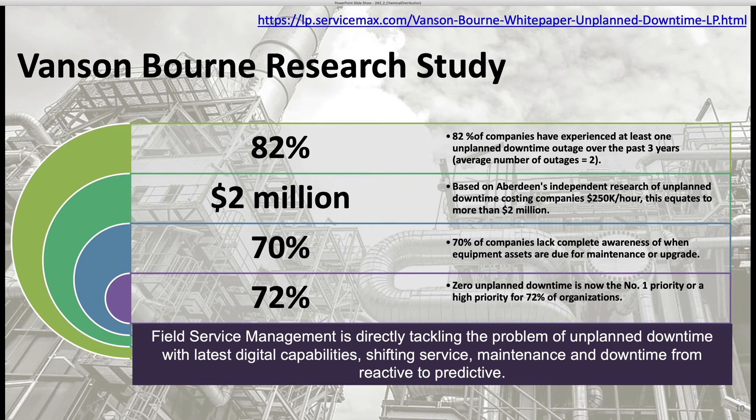Based on a study from the Aberdeen Research Group, 82% of companies have experienced at least one planned downtime outage over the past three years. The average loss is around two million dollars. Based on Aberdeen's independent research, unplanned downtime is costing companies around $250K per hour.